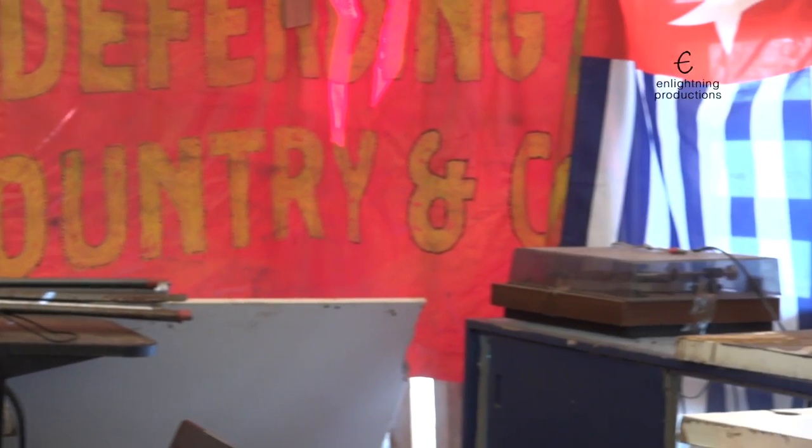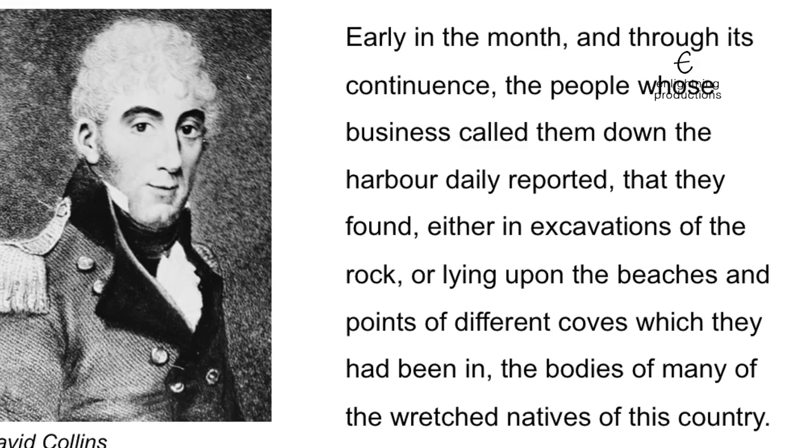In April 1789 a catastrophic epidemic of smallpox swept through local tribes near Port Jackson. This was a time when Aboriginal tribes were actively and successfully resisting settlers from the First Fleet. This outbreak was recorded by several fleeters; for example, David Collins wrote that the people whose business called them down the harbour daily found bodies of the wretched natives in excavations of the rock or lying upon beaches and points of different coves.